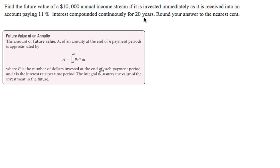So what's happening is every year there's an annual income stream, so every year you deposit $10,000 into this account, but it's continuously earning interest on the money that's in the account at an 11% interest rate. So not only are you adding money to the account over time, it's also earning interest over time. So this is an annuity.